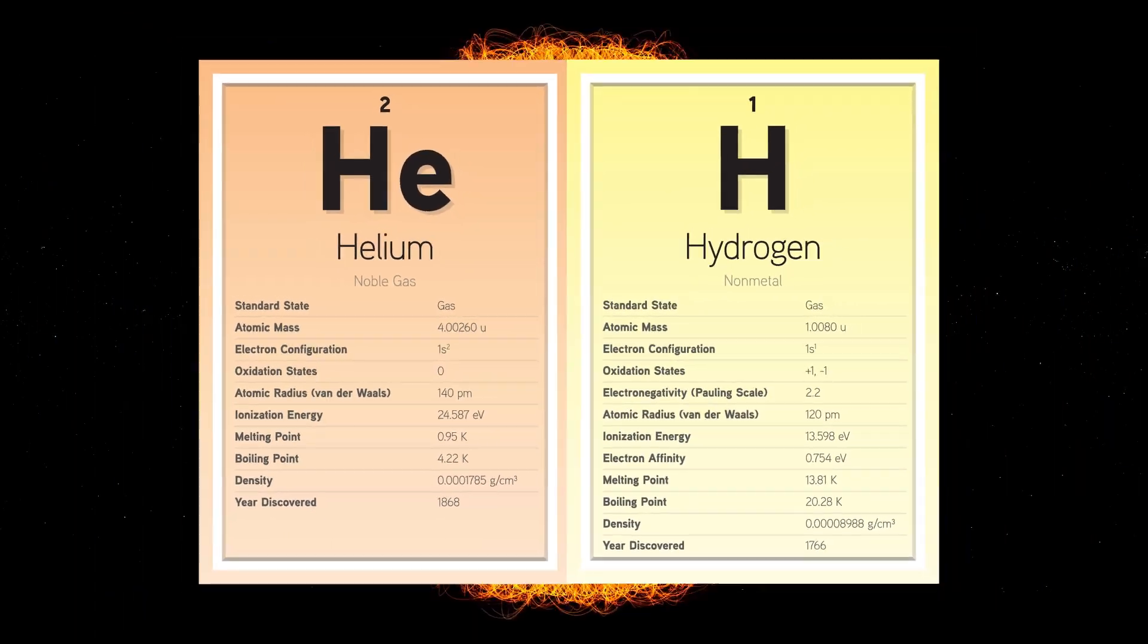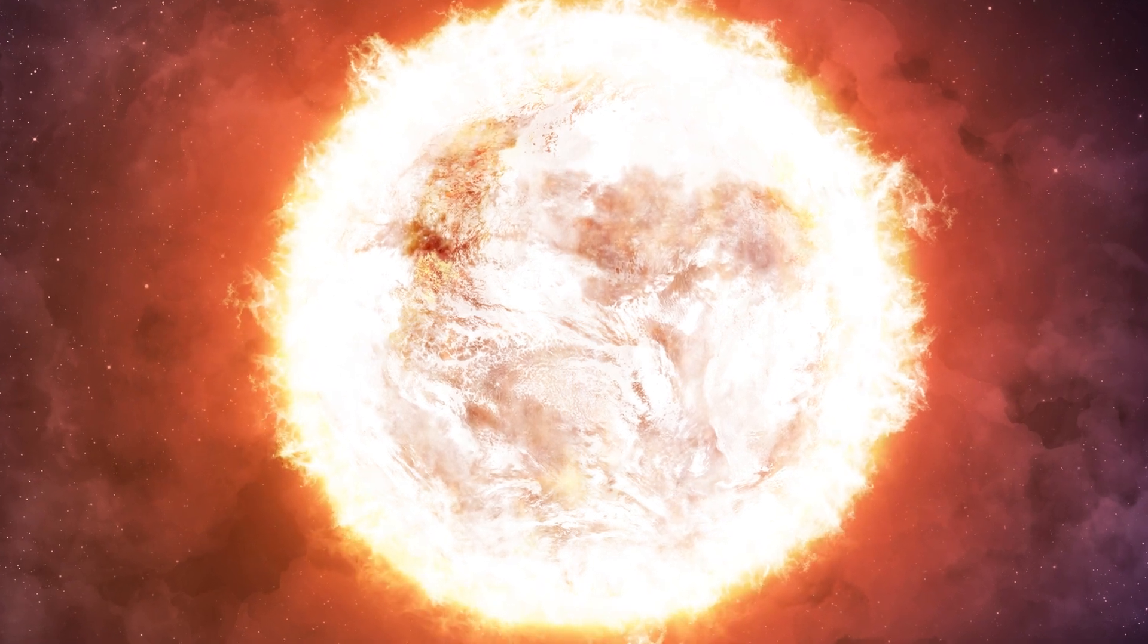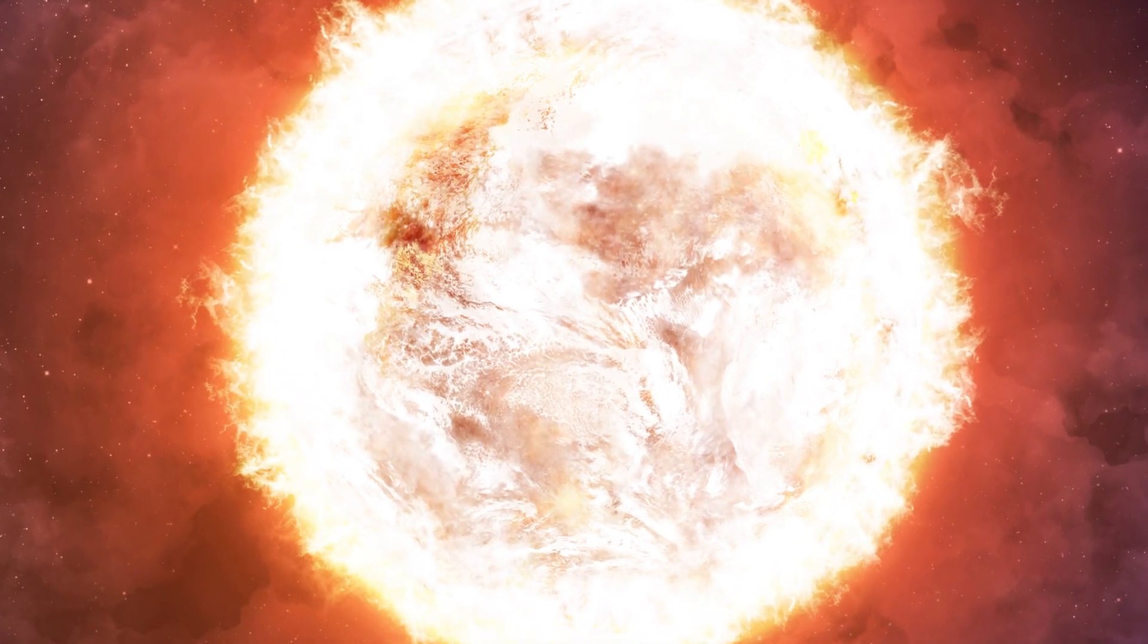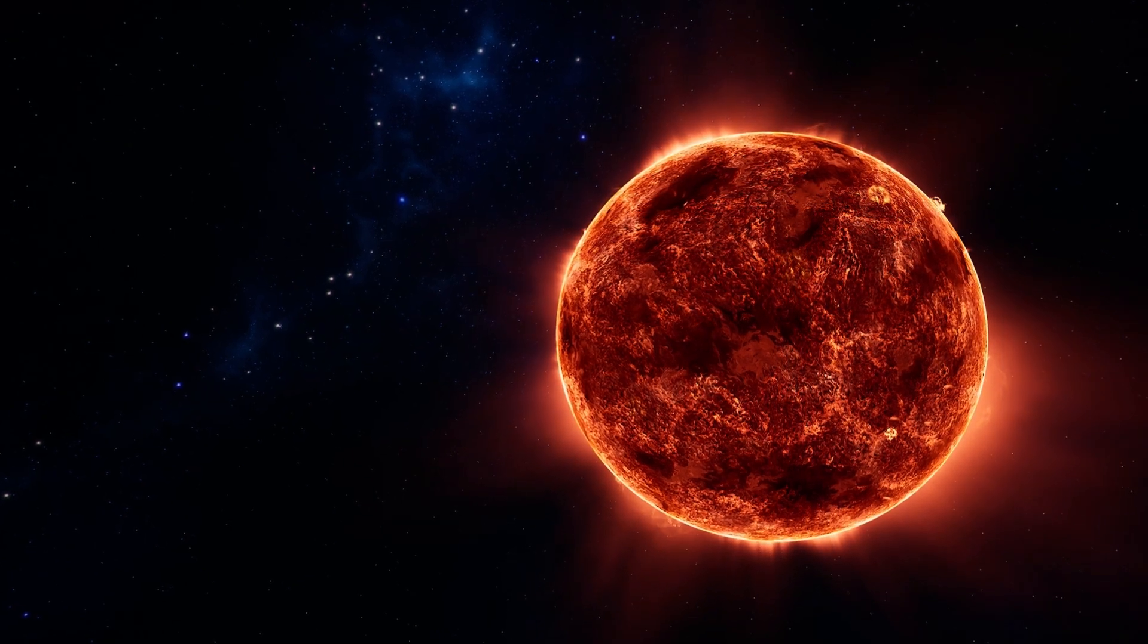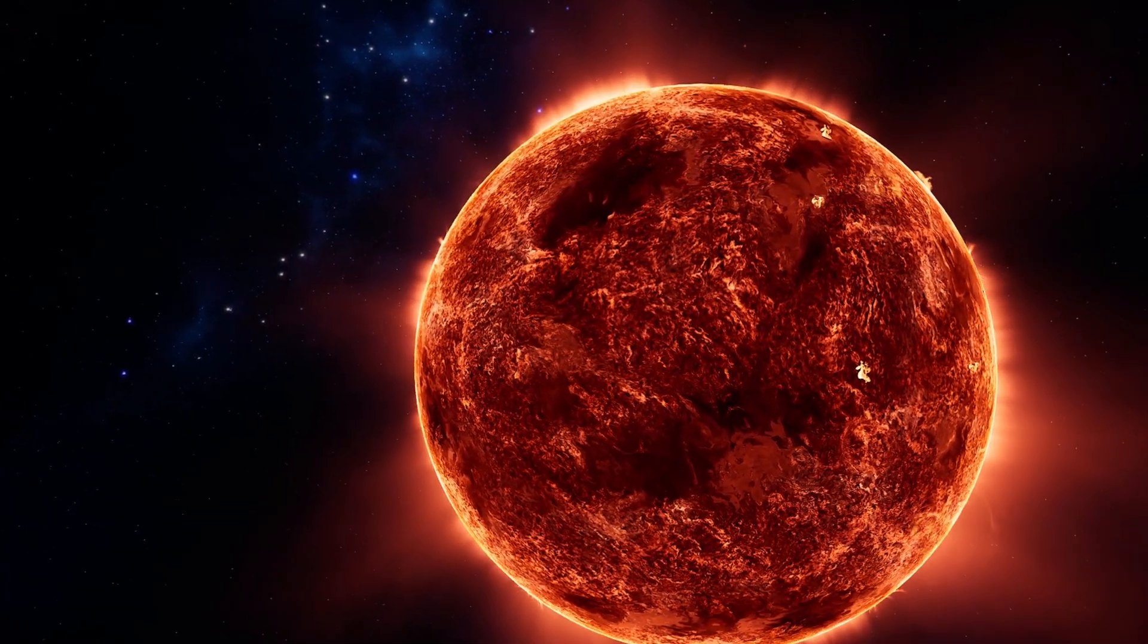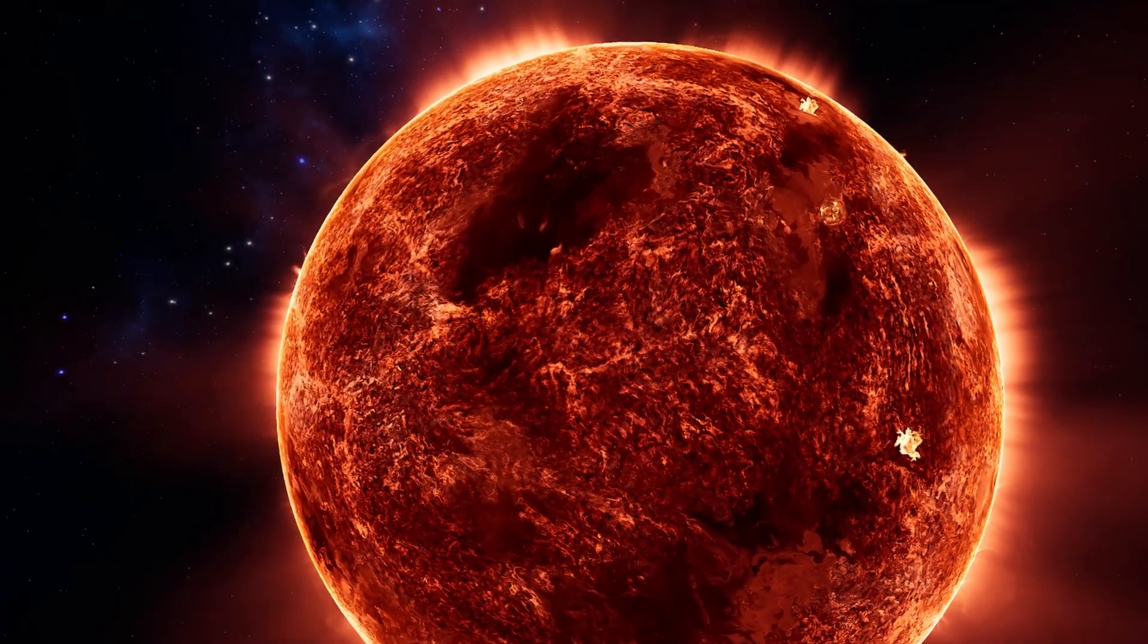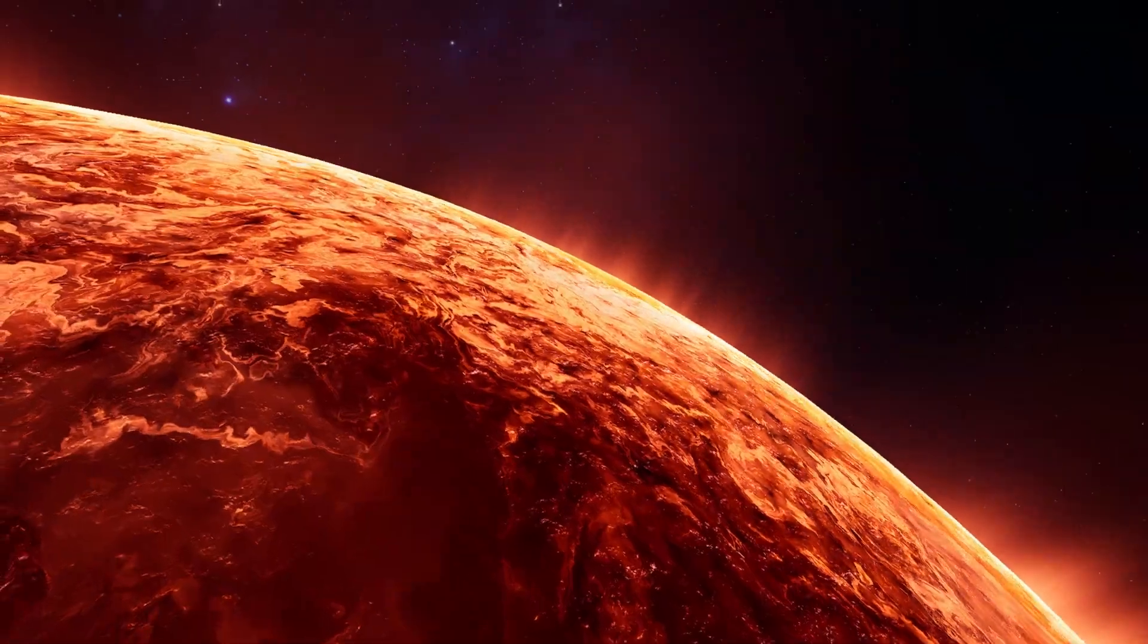Nuclear fusion powers a star for most of its existence. Initially, the energy is generated by the fusion of hydrogen atoms at the core of the main sequence star. Later, as the preponderance of atoms at the core becomes helium, stars like the sun begin to fuse hydrogen along the spherical shell surrounding the core. This process causes the star to gradually grow in size.